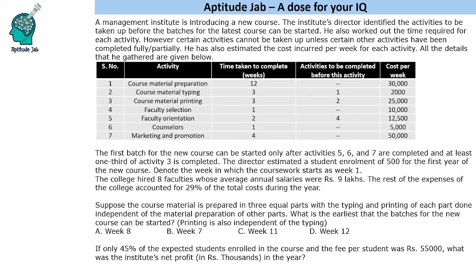Suppose the course material is prepared in 3 equal parts with the typing and printing of each part done independently of the material preparation of other parts. So material preparation, typing, and printing are all done in 3 parts. The breakdown is 4-1-1, 4-1-1, and 4-1-1. For 3 weeks we can divide into 3 parts. We need to find the earliest that batches for the new course can be started. Printing is also independent of typing, so these are all independent activities — now broken into 3 parts instead of previously 1 part.